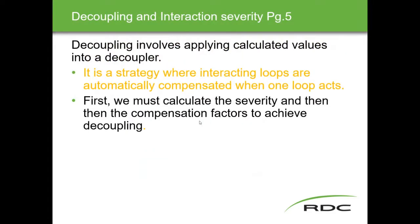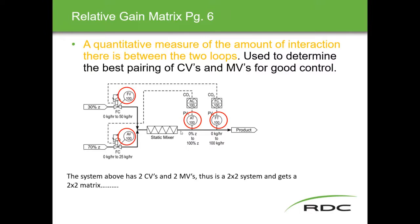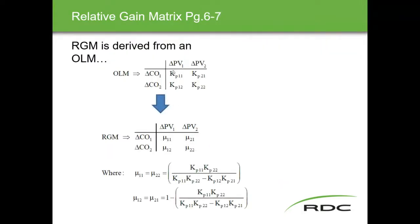Starting out with the calculations for the severity of loop interaction, from which we get the compensation factors to achieve decoupling. We look at the process variables PV1 and PV2 and the controlled variables CO1 and CO2. This system has two controlled variables and two manipulated variables — a two-by-two system — which gives us a two-by-two matrix. They can be bigger, but thankfully we only deal with two-by-two here.